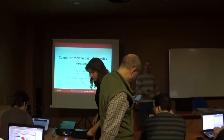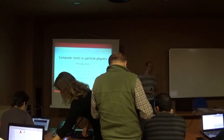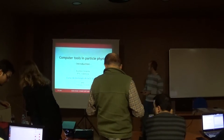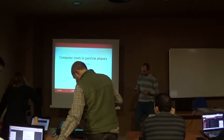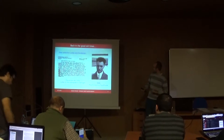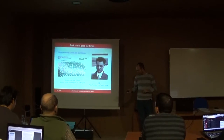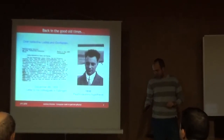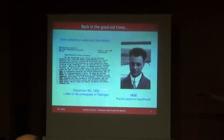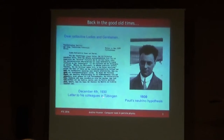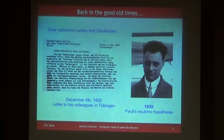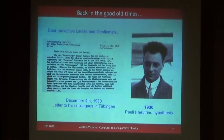People doing model building, phenomenology, and beyond the standard model physics will find this course very useful. I would like to begin with a piece of history, which is basically this letter that you probably know already. This is a letter that was written by Pauli to people at a conference in Tübingen in 1930, and this is the famous letter where he proposed the existence of the neutrino.